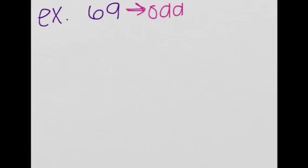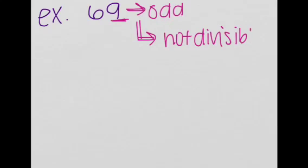How do we know that? Because the last digit is 9. And 9 is not part of the group of 0, 2, 4, 6, or 8. And therefore, 69 is not divisible by 2.